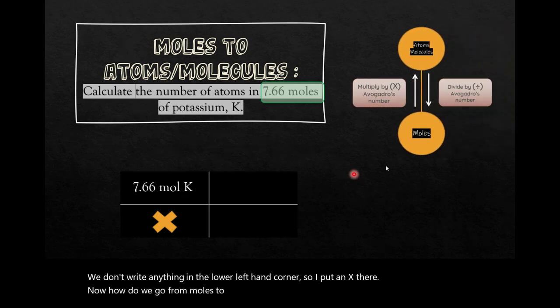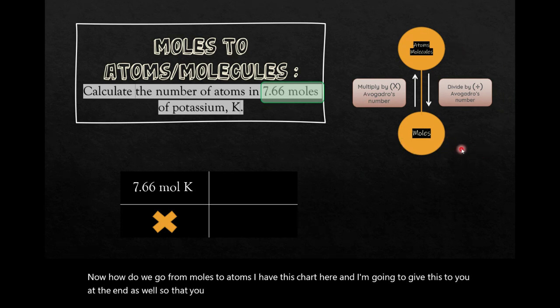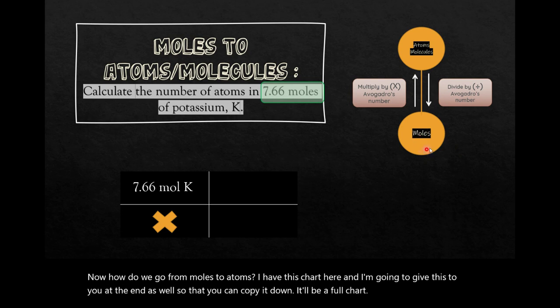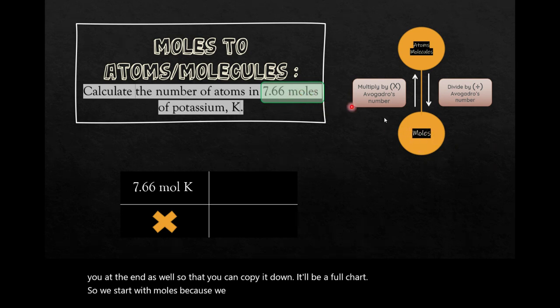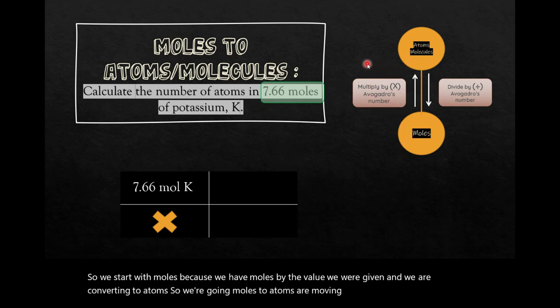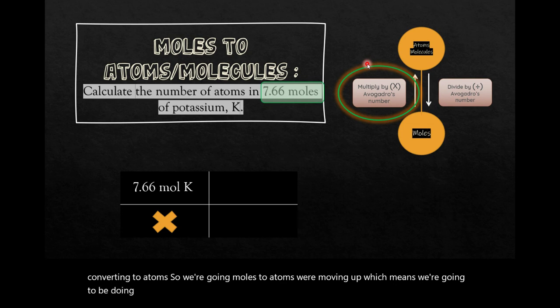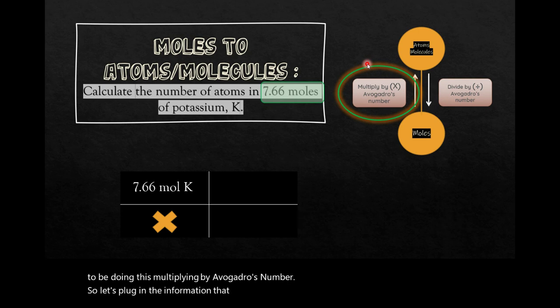Well, I have this chart here, and I'm going to give this to you at the end as well so that you can copy it down. It'll be a full chart. So we start with moles because we have moles by the value we were given, and we are converting to atoms. So we're going moles to atoms. We're moving up, which means we're going to be multiplying by Avogadro's number. So let's plug in the information that we need, which we need Avogadro's number. Here it is, in case you have forgotten.